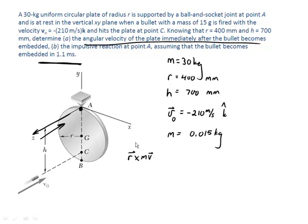So the radius in this case is not the radius of the plate. That's actually going to be H. So it's going to be 700 millimeters, which is 0.7 meters. And then R is in this direction.